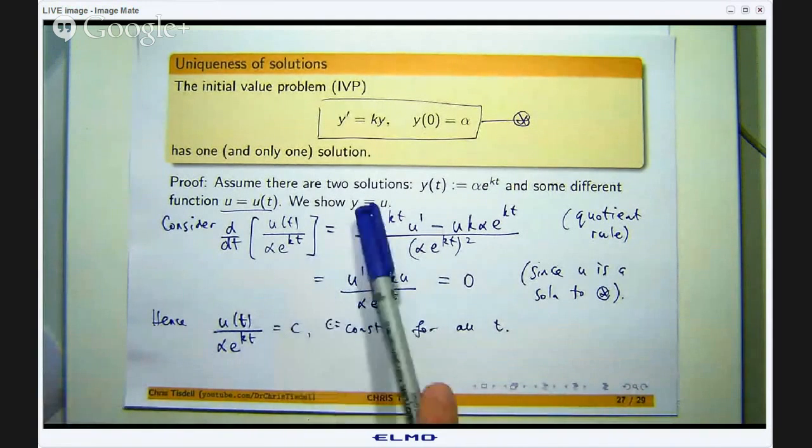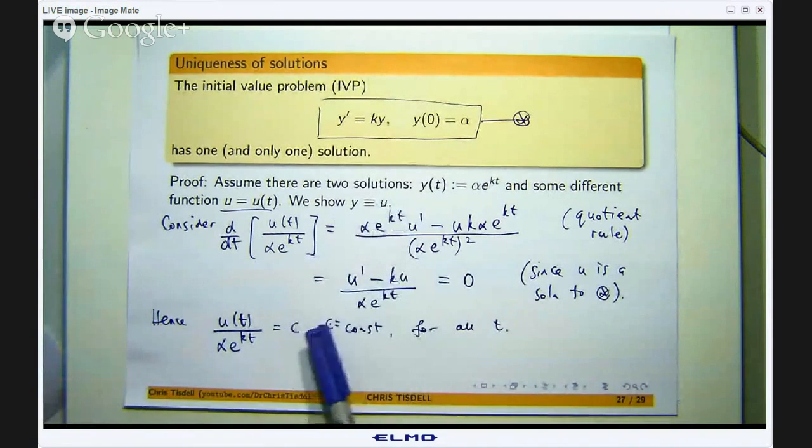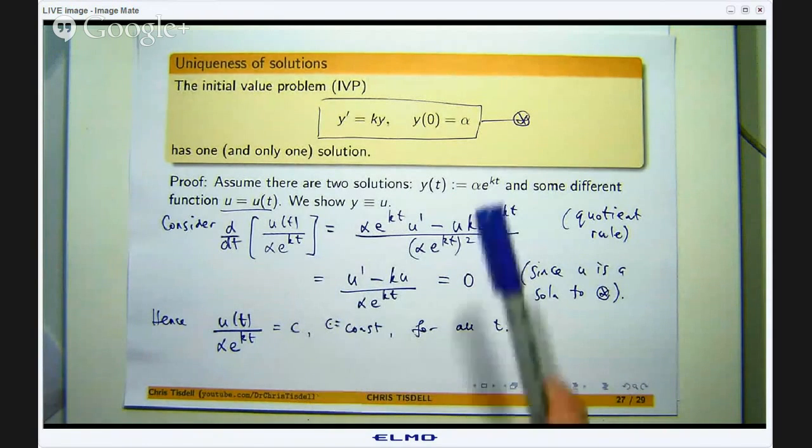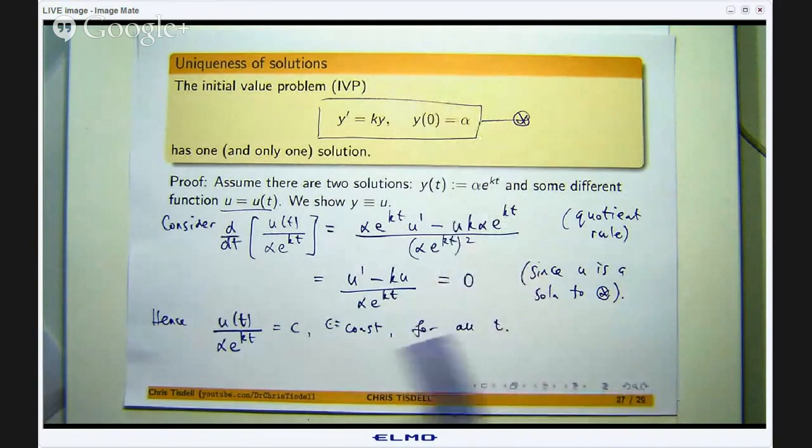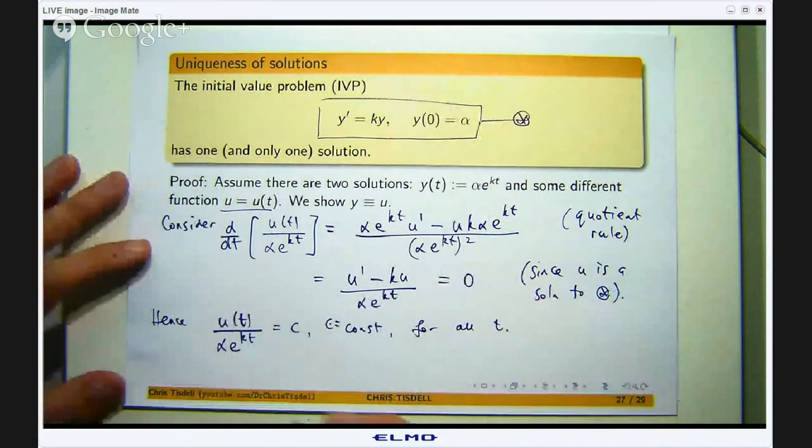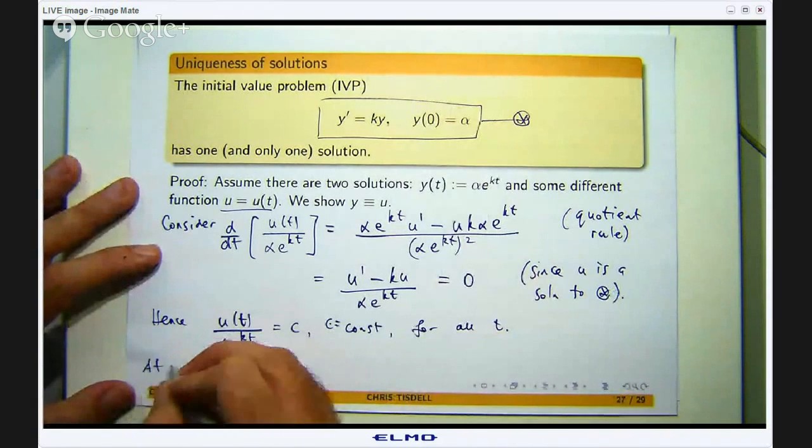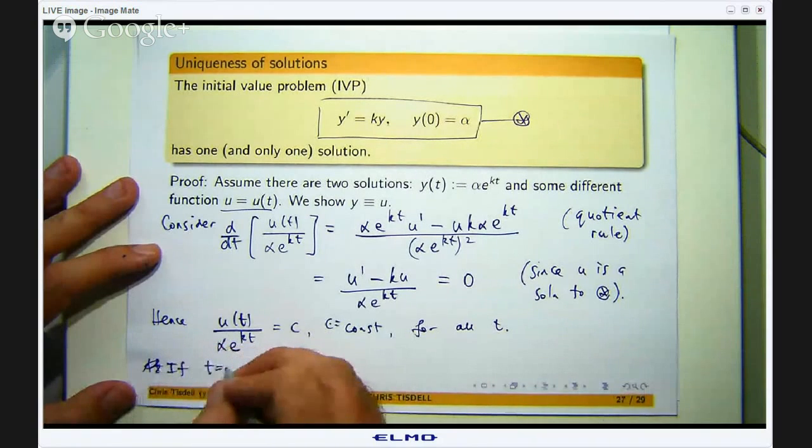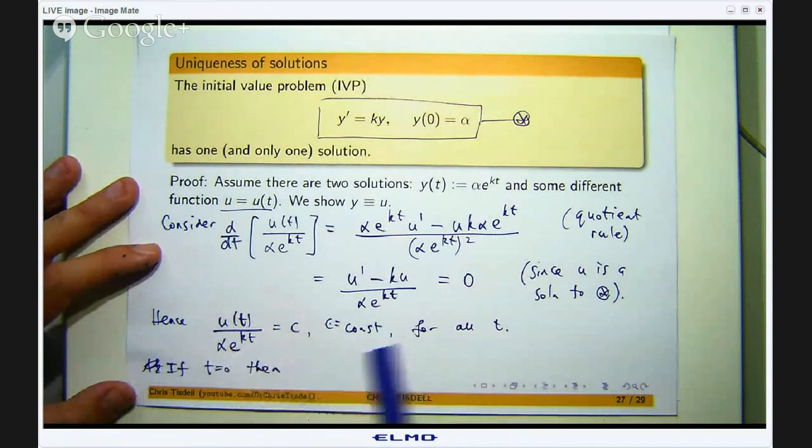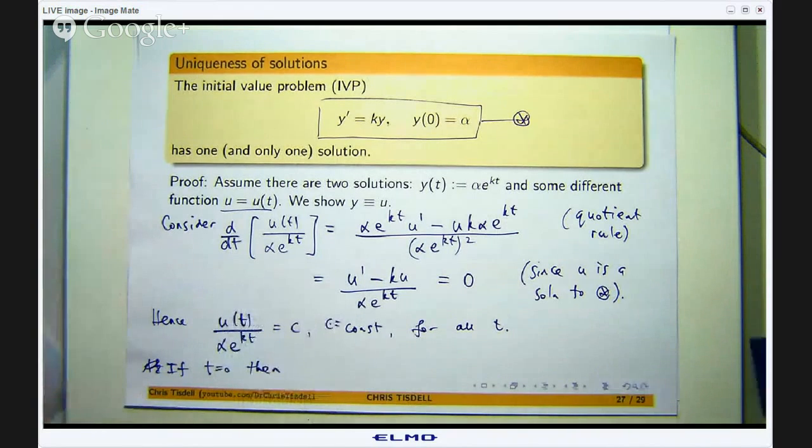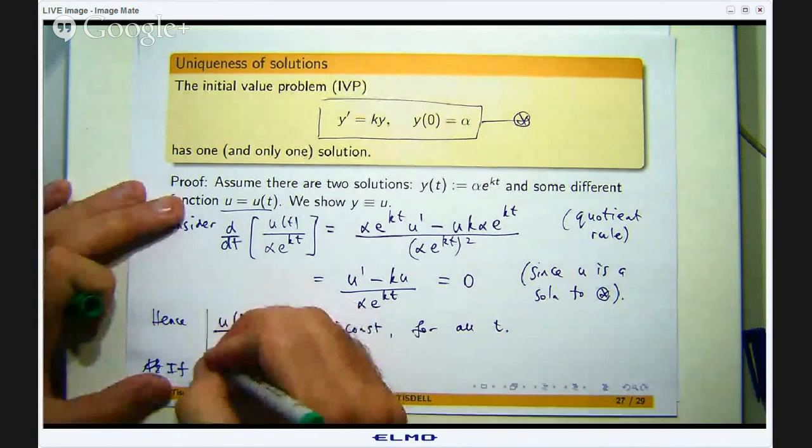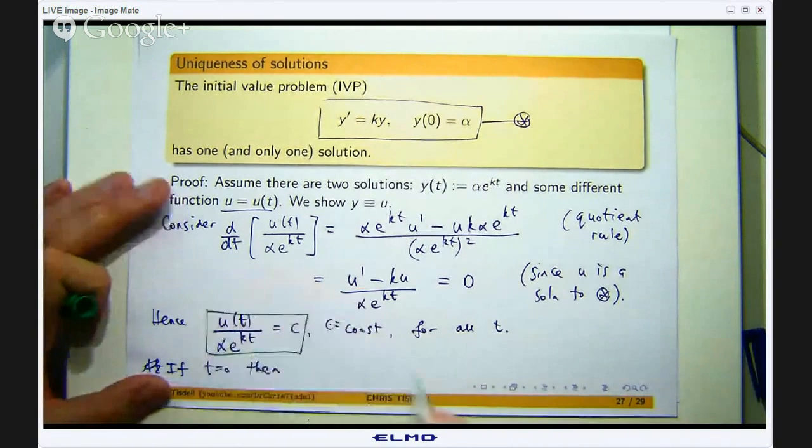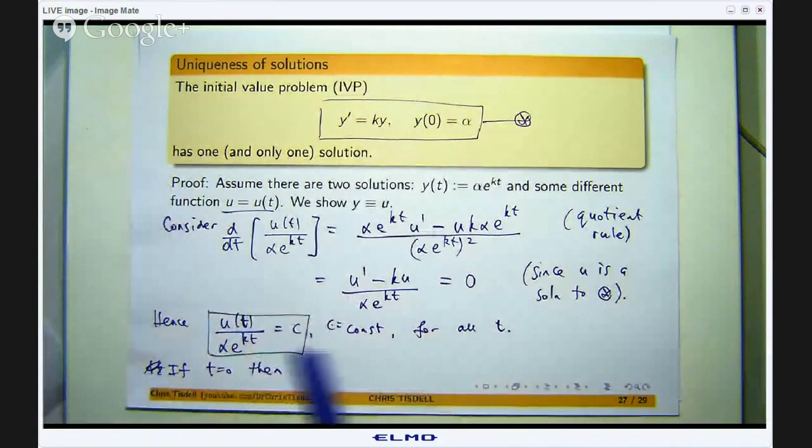Okay, so if this is constant everywhere, all I really need to do to show this is that c equals 1. How can I do that? Well I have not used this initial condition yet. Okay, so if t equals 0, what happens?